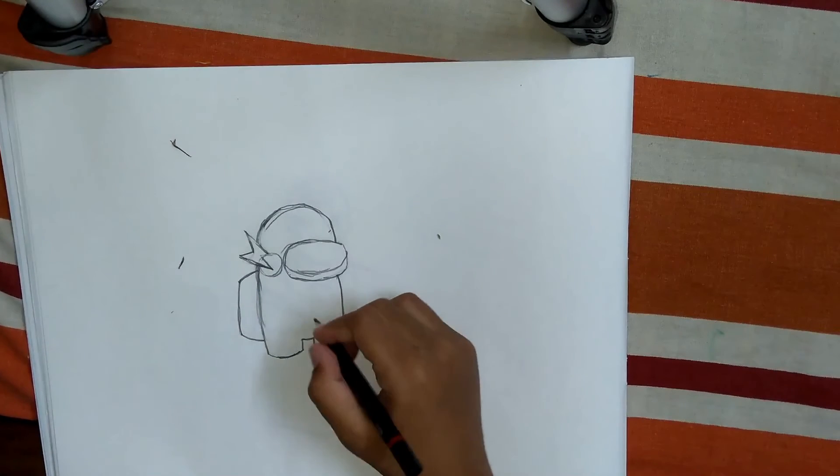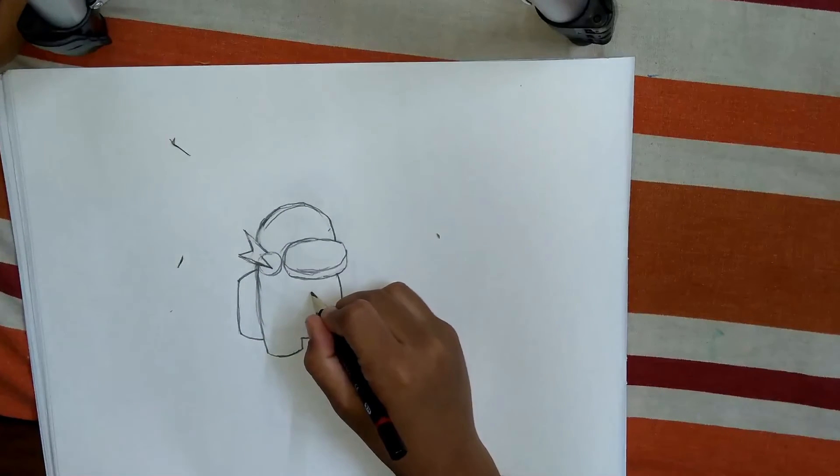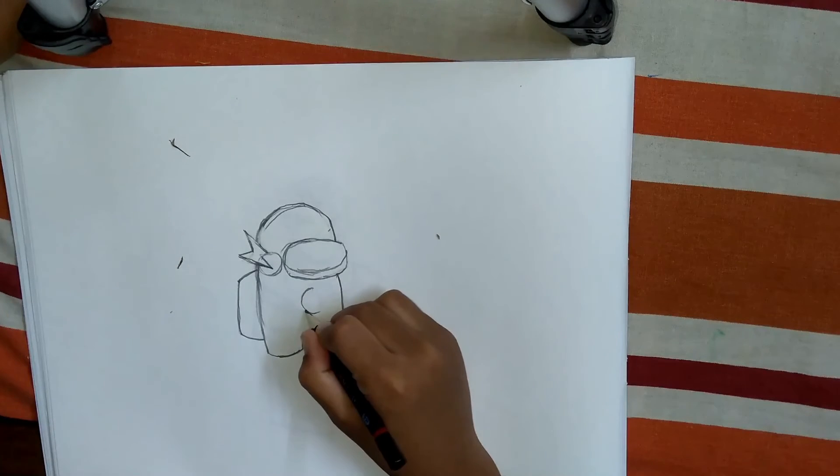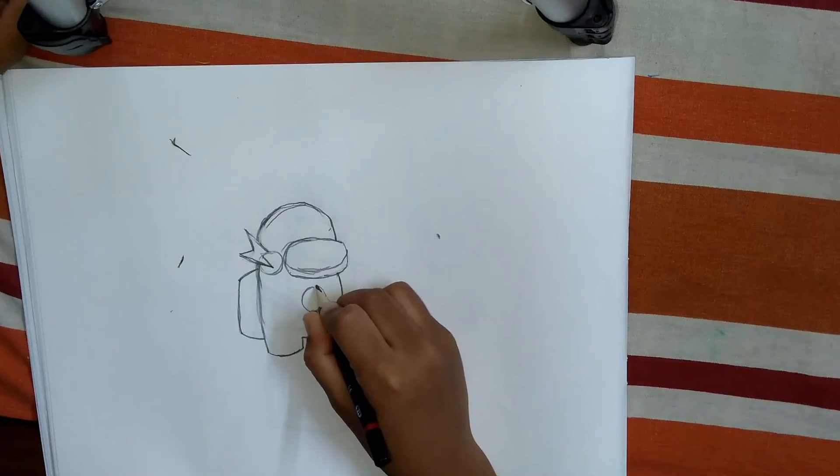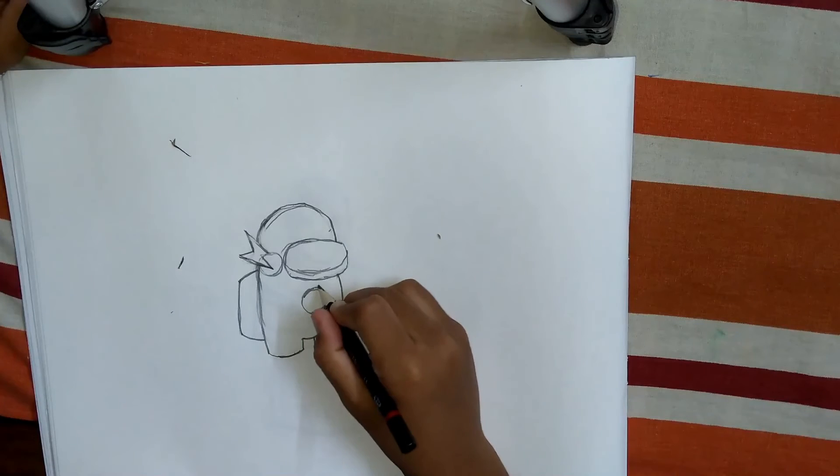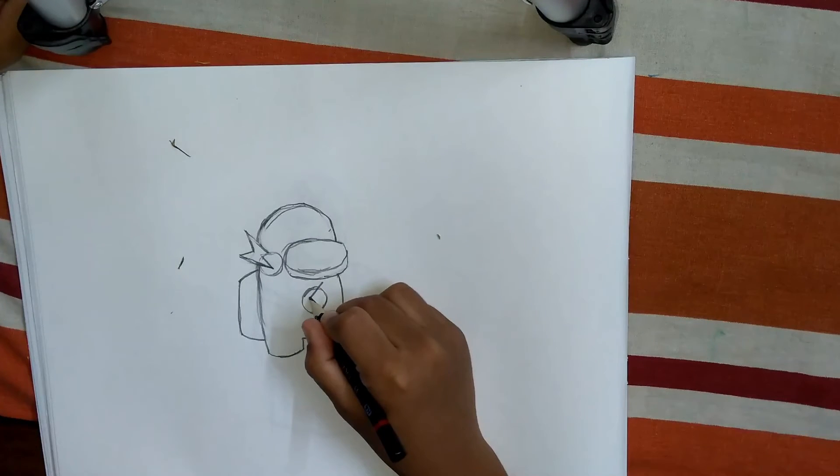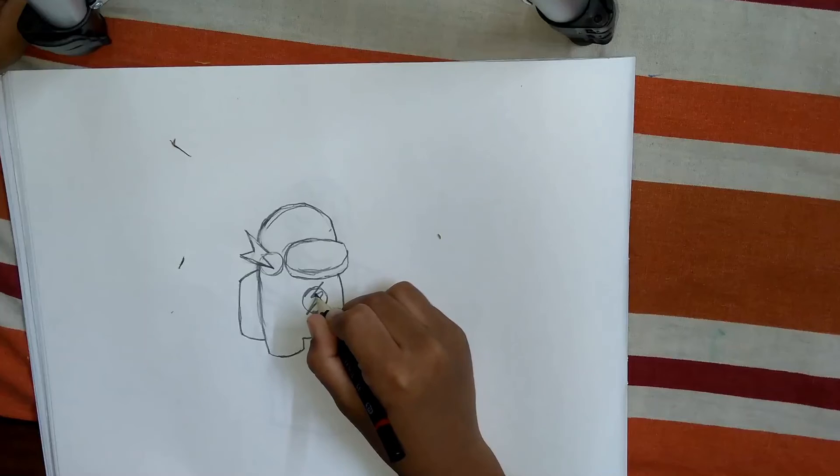Next, we are going to draw a Flash symbol here. Draw a circle and then draw thunder, like this.